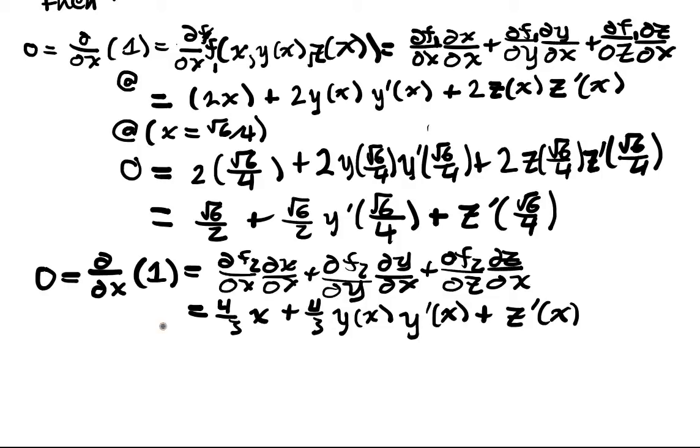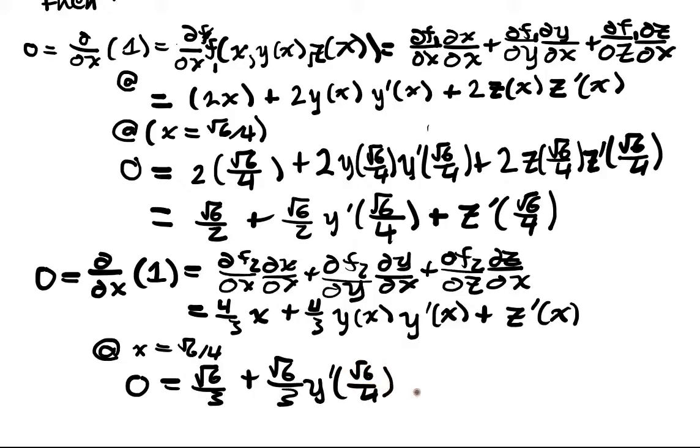And if we evaluate at x = √6/4, we obtain 0 = √6/3 + √6/3 y'(√6/4) + z'(√6/4). So differentiating both implicit functions gives me two linear equations in terms of y' and z' at that particular point.